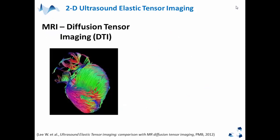However, ETI is not the only imaging modality that allows for tissue anisotropy evaluation. MRI diffusion tensor imaging, DTI, is also capable of doing it, as seen in these fiber tracking images. However, comparing with ETI, the temporal resolution of DTI is very low — for one specific moment of the cardiac cycle, we need 45 minutes of acquisition, instead of ETI which only requires 20 milliseconds. So ETI has a higher temporal resolution and can be applied in clinical practice.